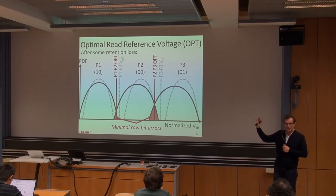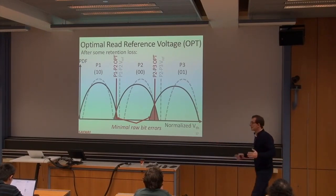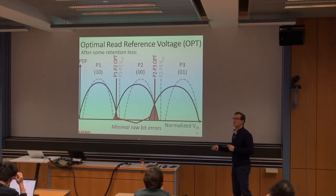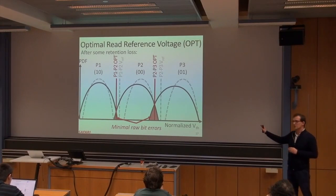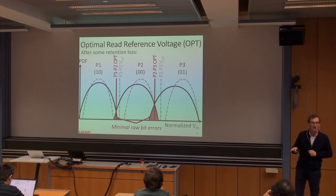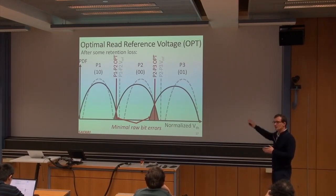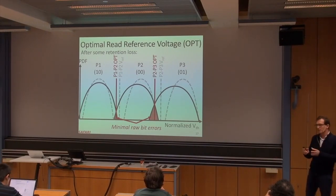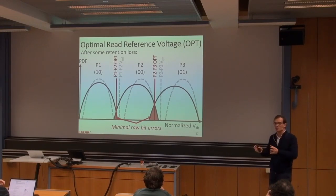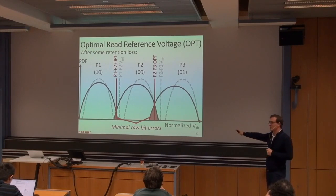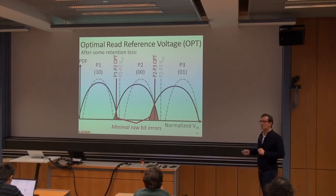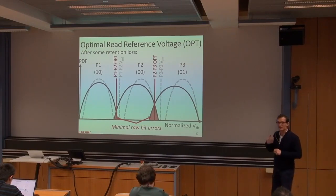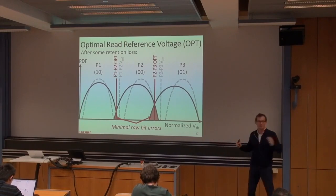More sophisticated controllers try to predict what the threshold voltage distribution will be over time and minimize read retries. They build online models that characterize the distribution given how long data has been stored, how neighboring pages were programmed, and other factors. Based on these models, the controller picks the optimal read reference voltage proactively. There's a lot of very interesting research on minimizing raw bit errors in this way.